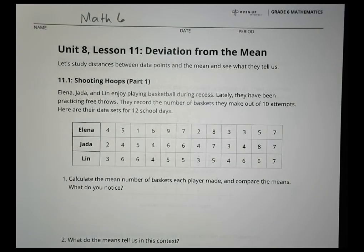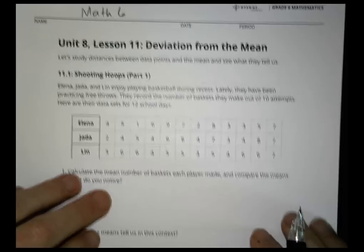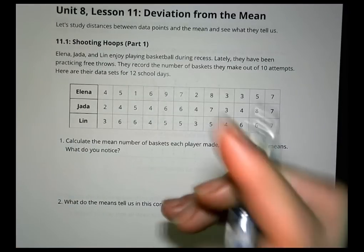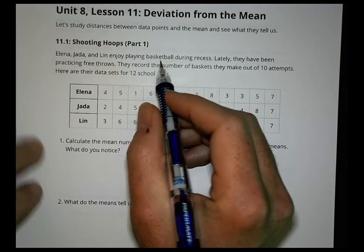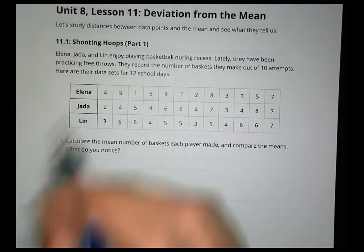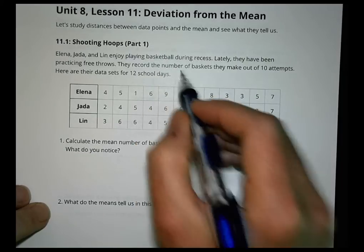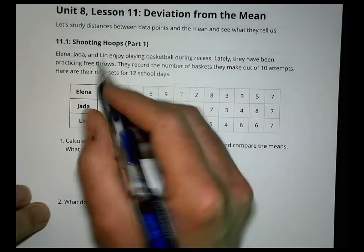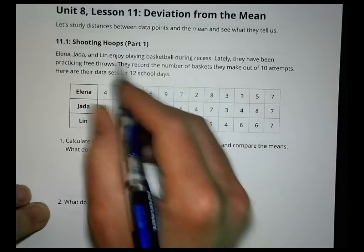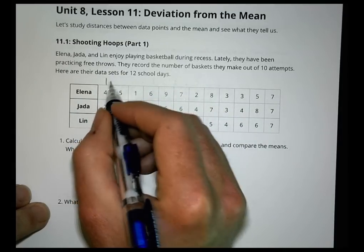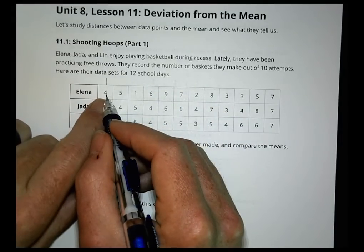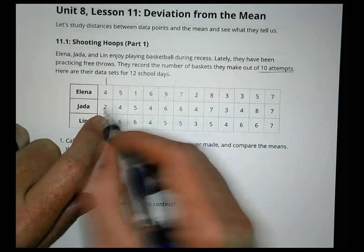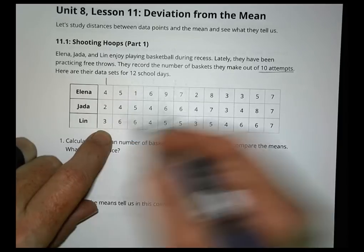The first activity is called Shooting Hoops, Part 1. Elena, Jada, and Lynn enjoy playing basketball during recess. Lately they have been practicing free throws and record the number of baskets they make out of 10 attempts. Here are their data sets for 12 school days. For example, on school day number 1, Elena made 4 out of 10 attempts, Jada made 2 out of 10, and Lynn made 3 out of 10.